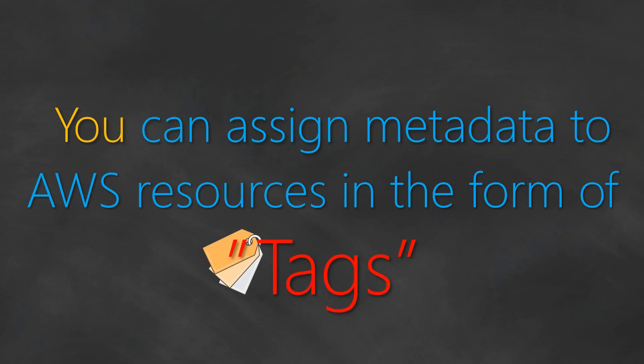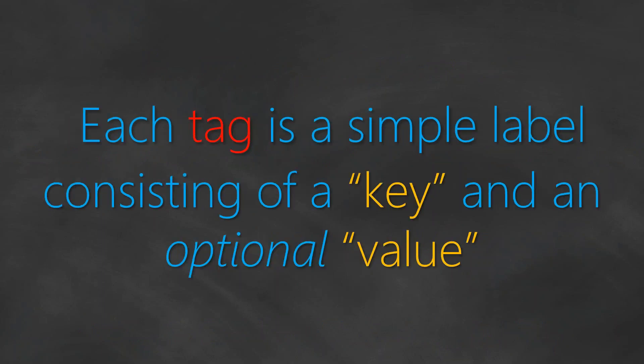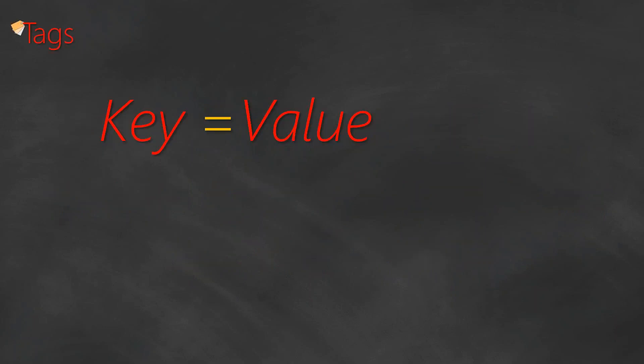AWS helps you with this. You can assign metadata to each of those resources that is in your account, and these are called tags. What exactly is a tag? A tag is nothing but a simple label, and the label has two items: one is called a key, and it can have an optional value also.